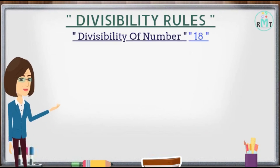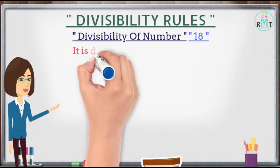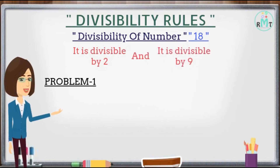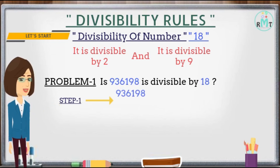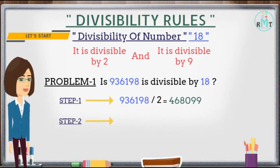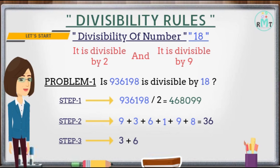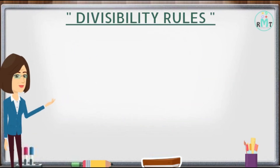Now we will check the divisibility rule for number 18: a number is divisible by 18 if it is divisible by both 2 and 9. Problem 1: Is 936198 divisible by 18? Step 1: The number 936198 is divisible by 2 as its last digit 8 is even. Step 2: Add all the digits and get 36. Step 3: Add the digits of 36 and get 9, which is divisible by 9. Hence 936198 is divisible by 18.